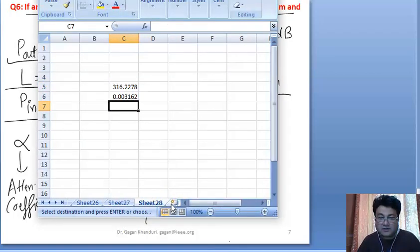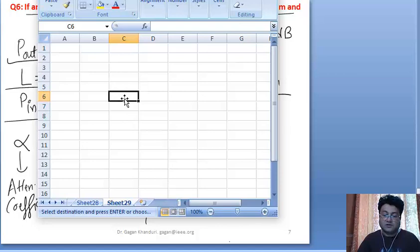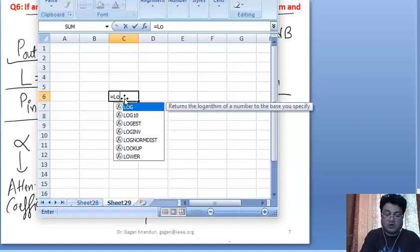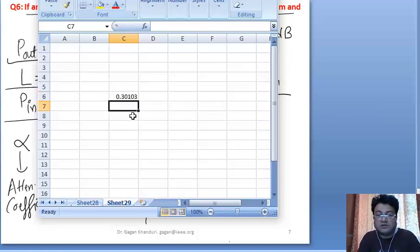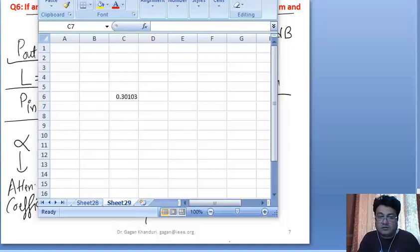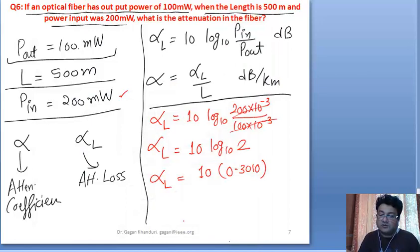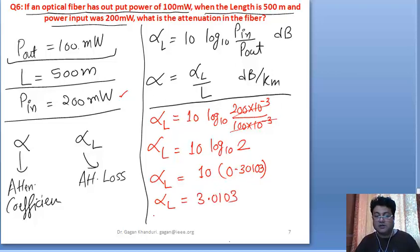I'm going to find log base 10 of 2. This is 0.30103. So alpha_L is actually 10 times this, which becomes 3.0103. This is my attenuation loss.